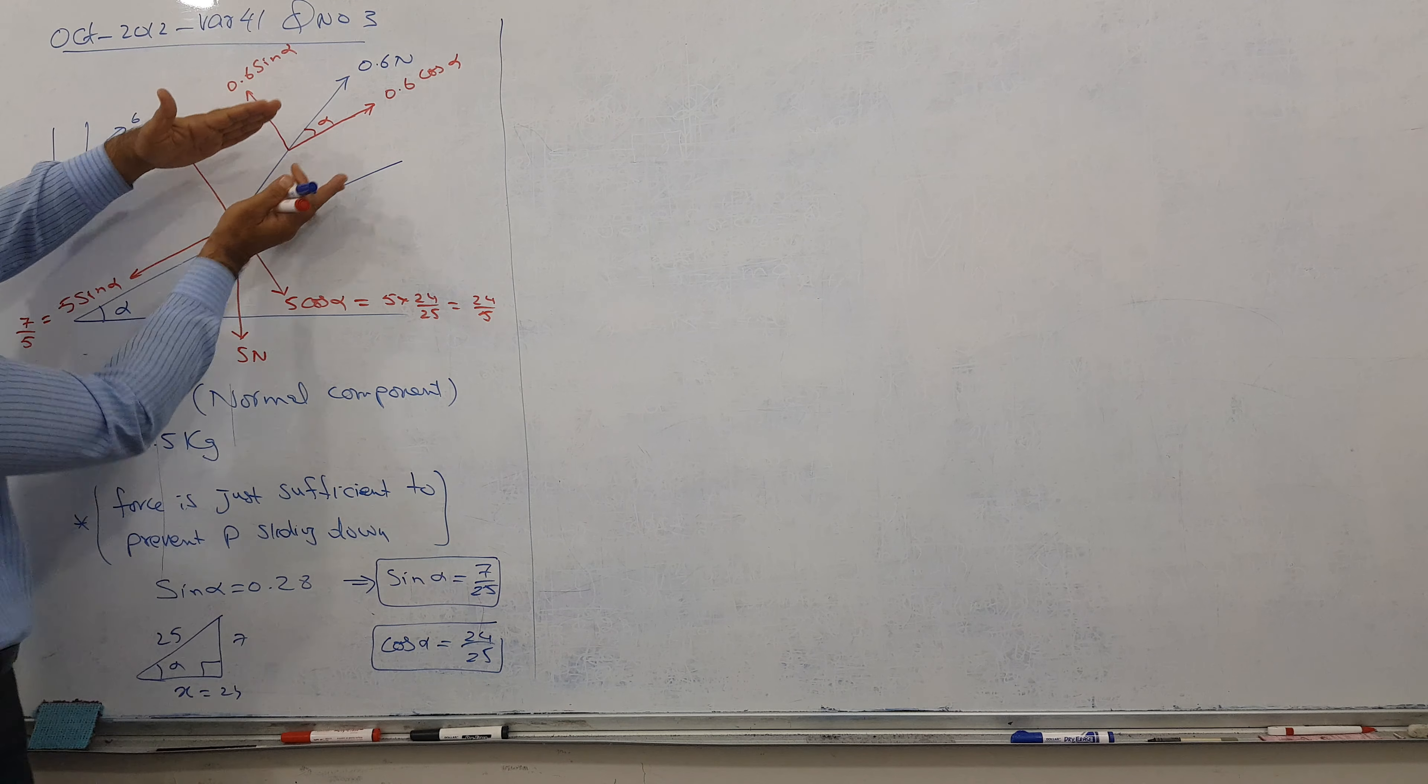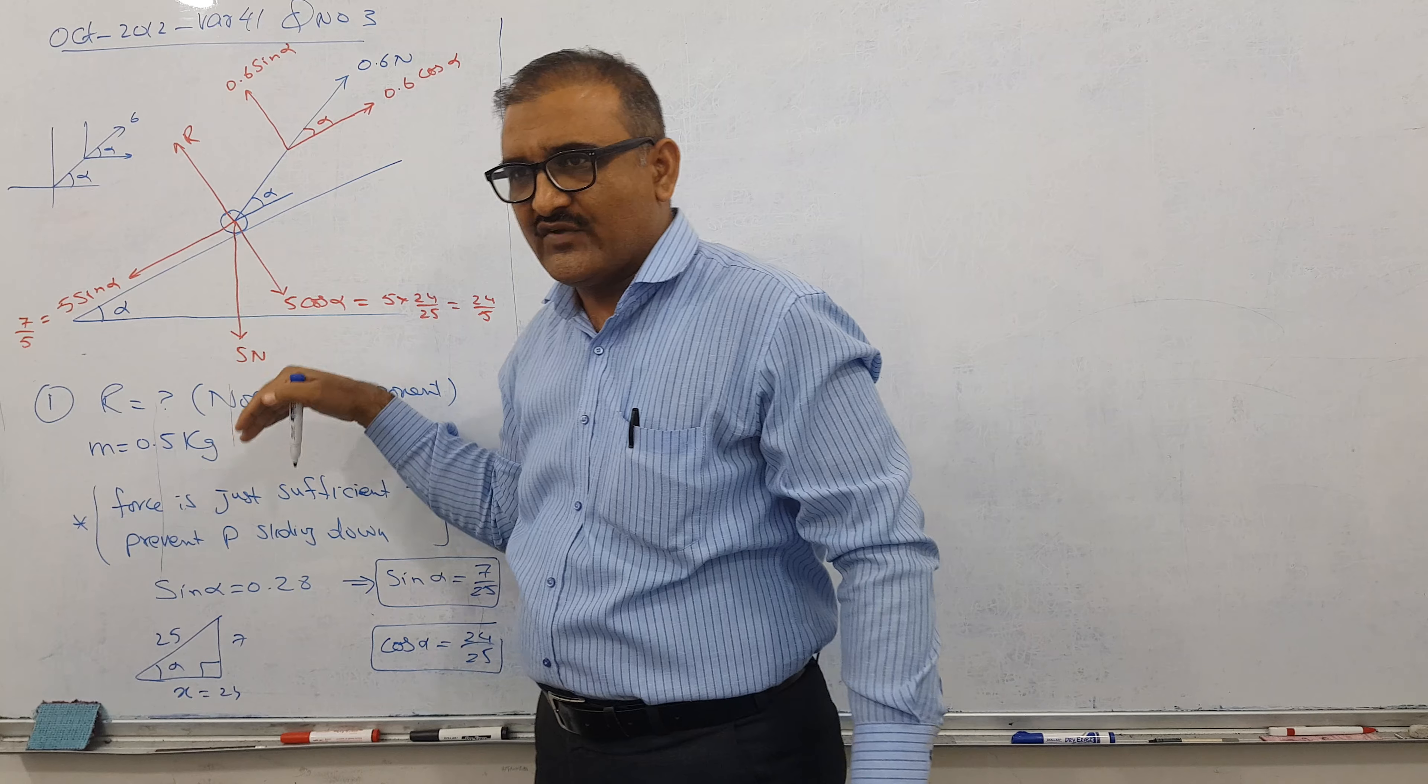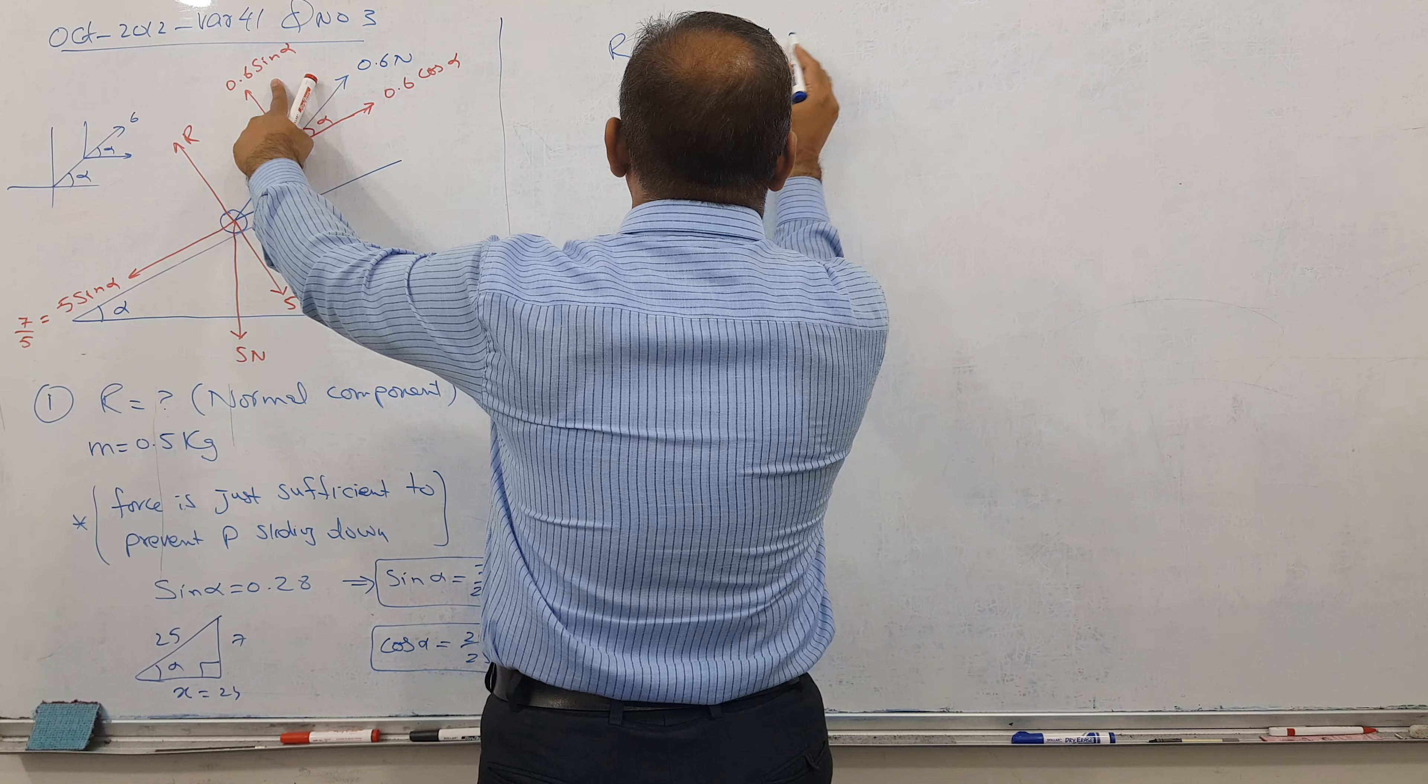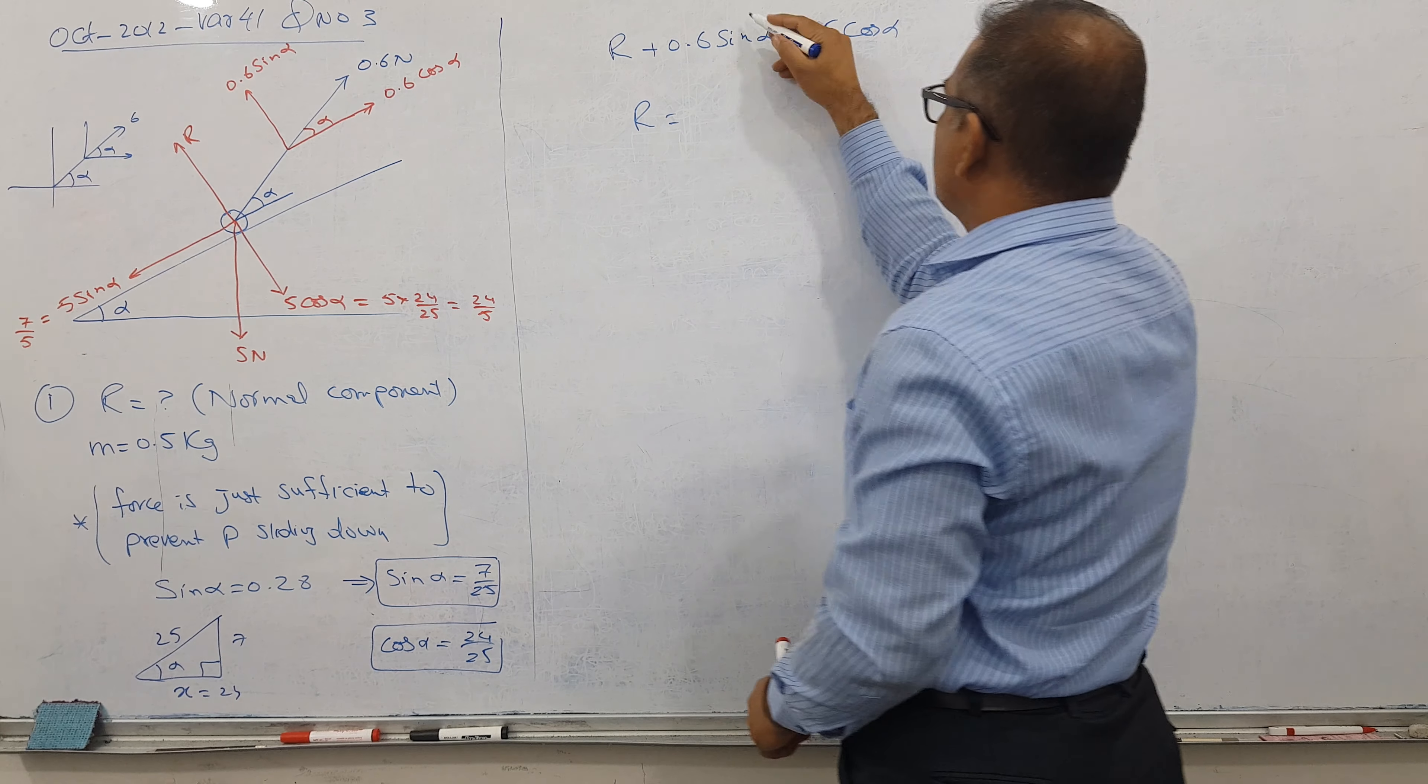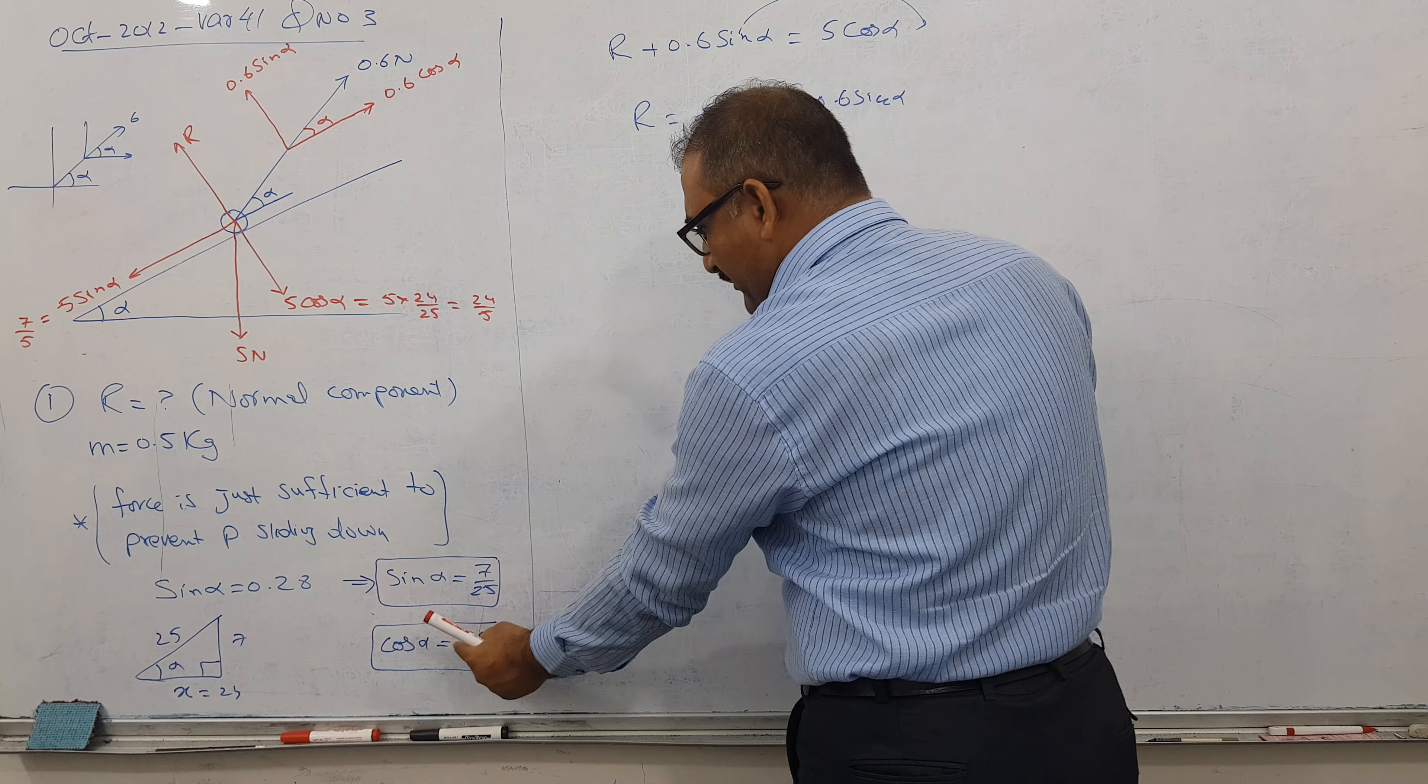You can see that these two components are parallel to each other. I think I can find now easily what my target is. Can I say this is R? I talk about perpendicular to surface. R up, this up and this down, so I can say that R plus 0.6 sin alpha is equal to 5 cos alpha. Let me write first 5 cos alpha. This goes this end so I got 5 cos alpha minus 0.6 sin alpha.